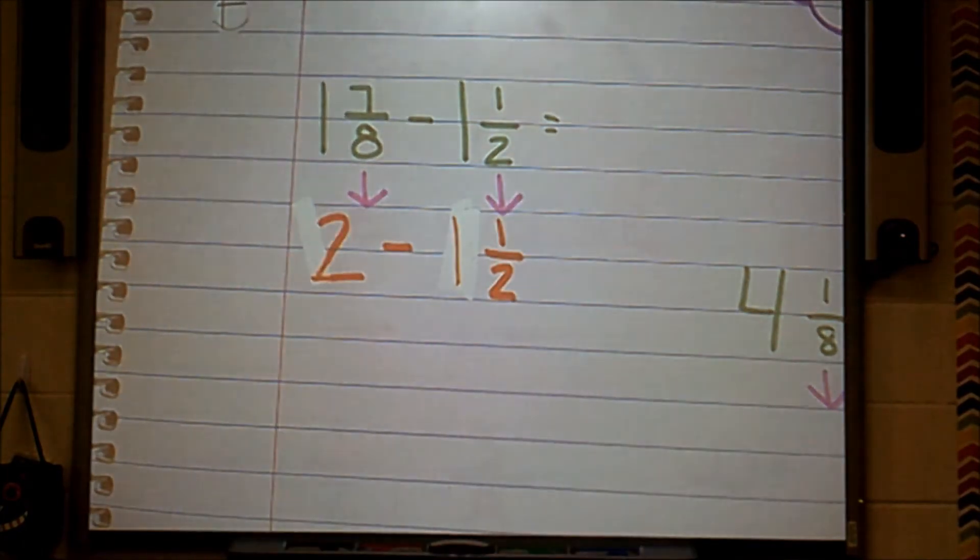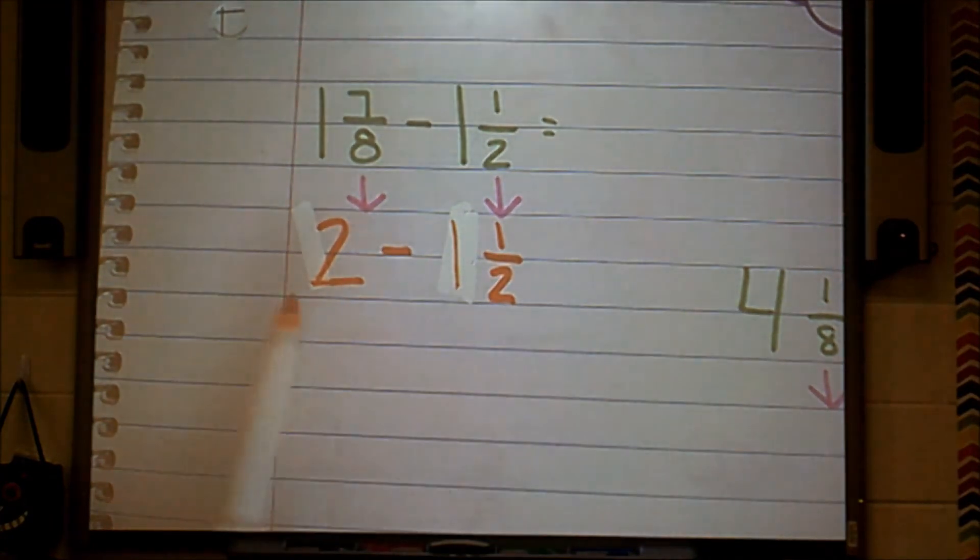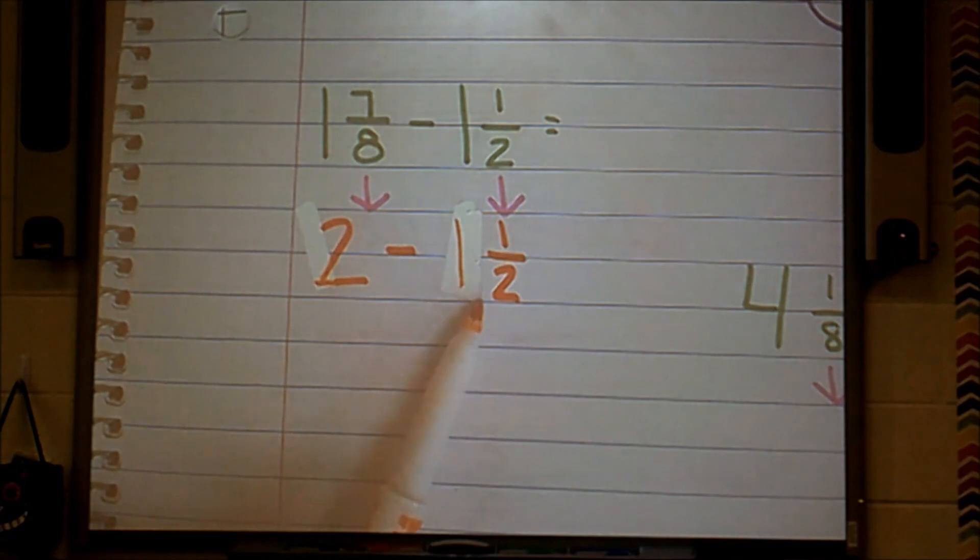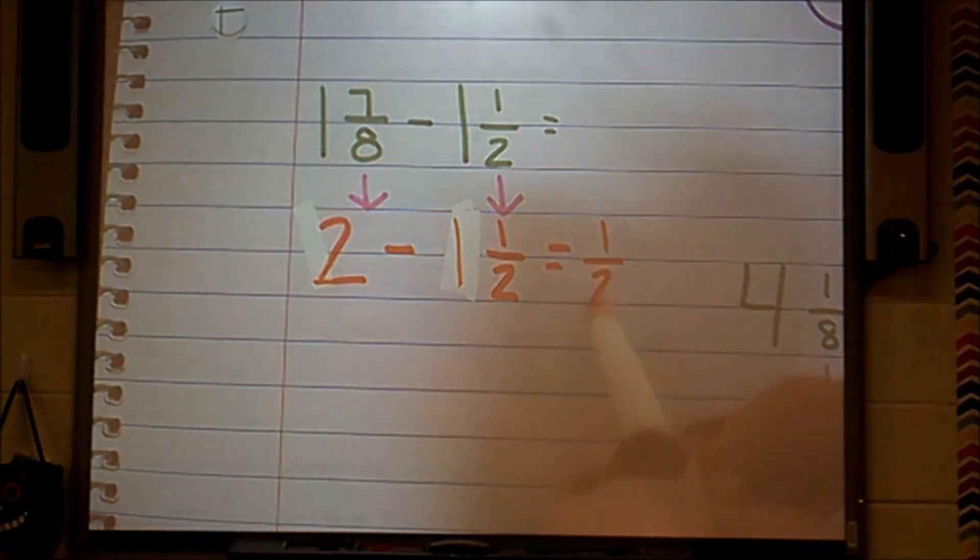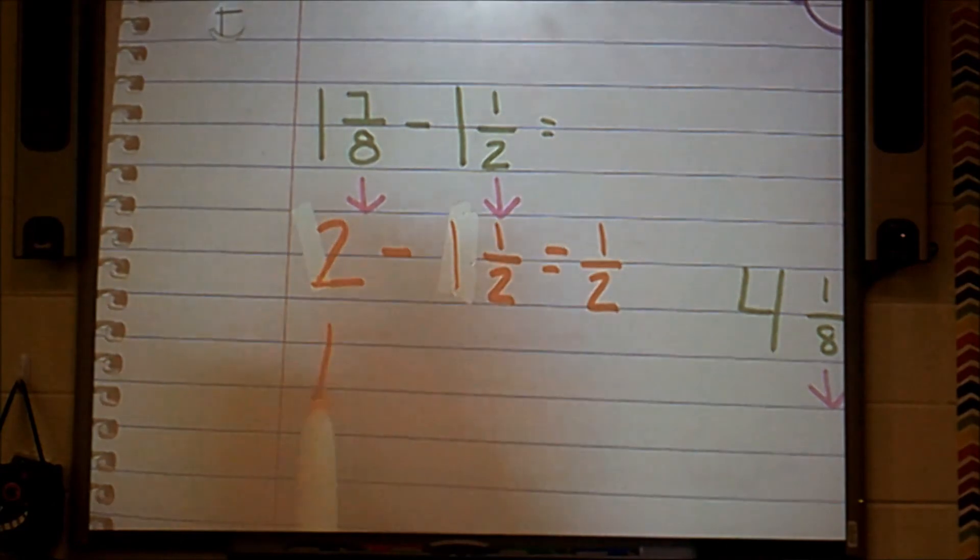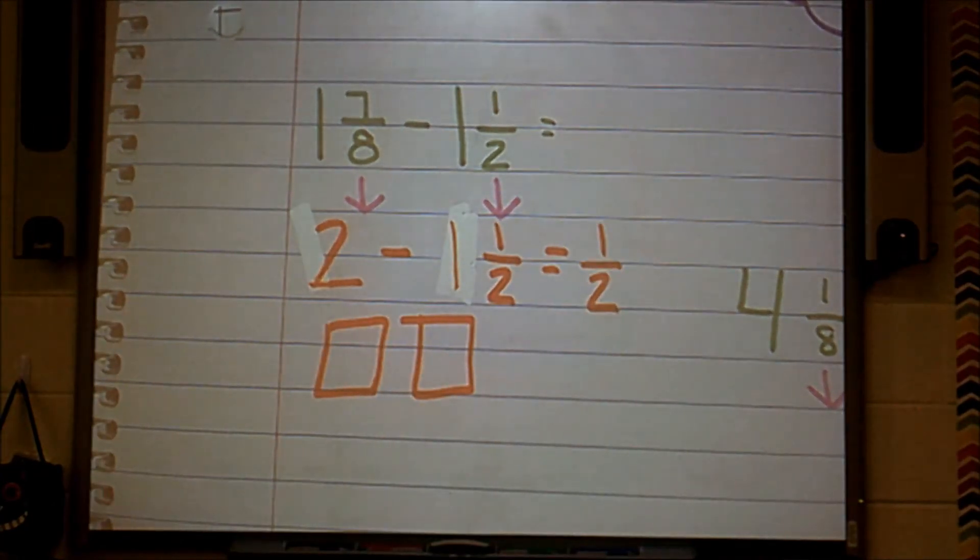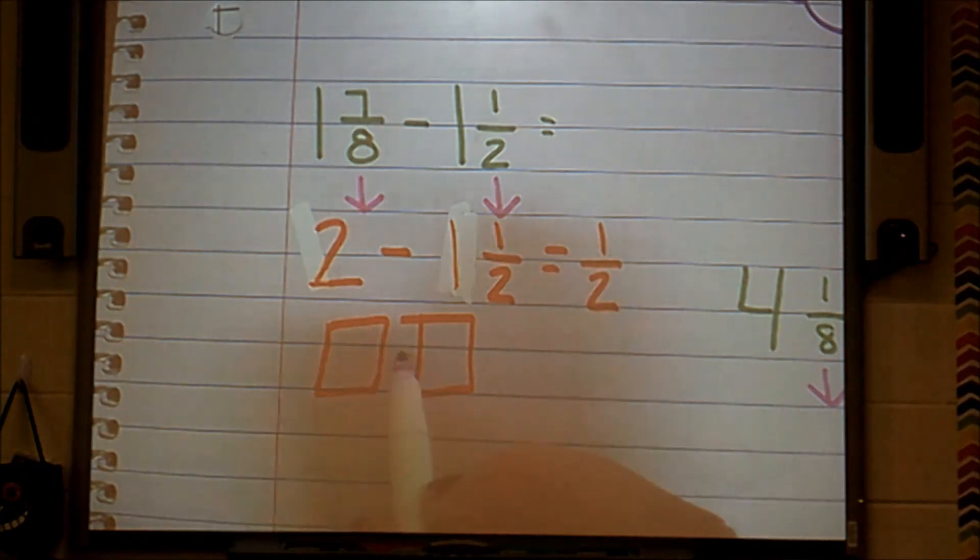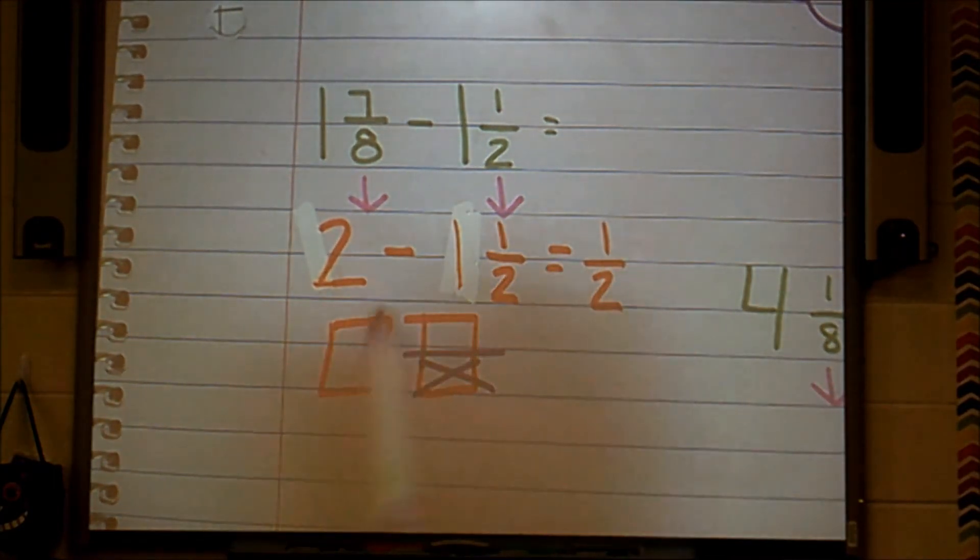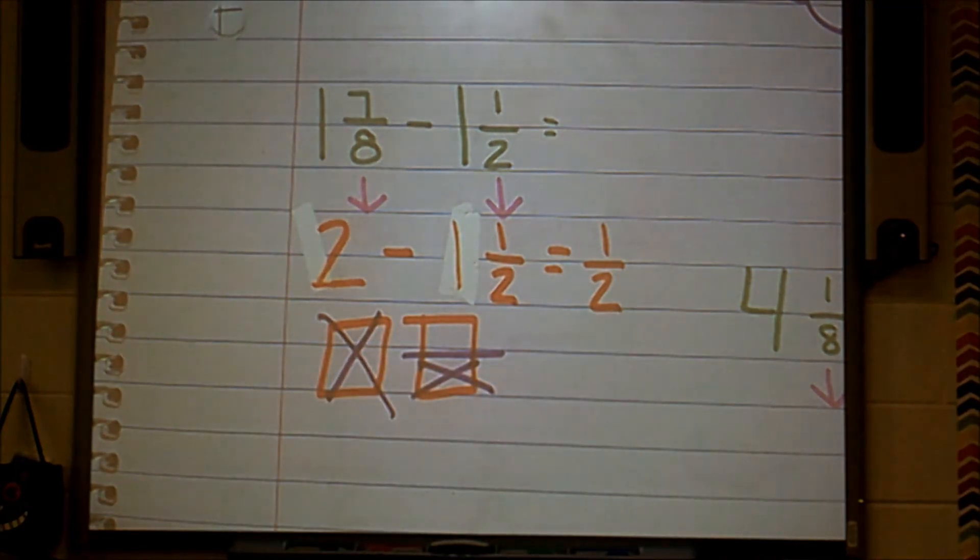This operation also has me subtracting. So now I have 2 dollars and I subtract 1 and a half dollars. This gives me half a dollar left. I have 2 wholes. I'm going to subtract my half first, and then subtract the whole. And I am left with just half of that square pizza, for square pizza.